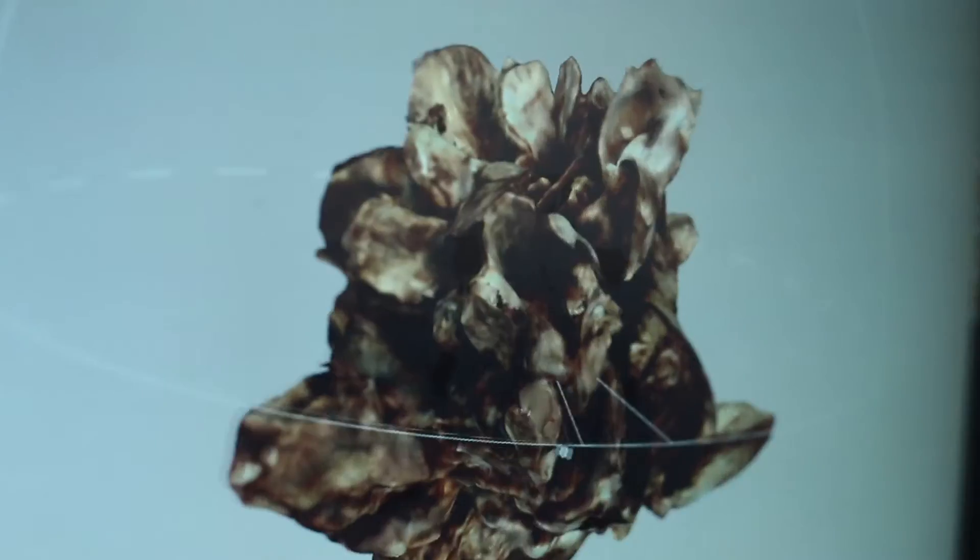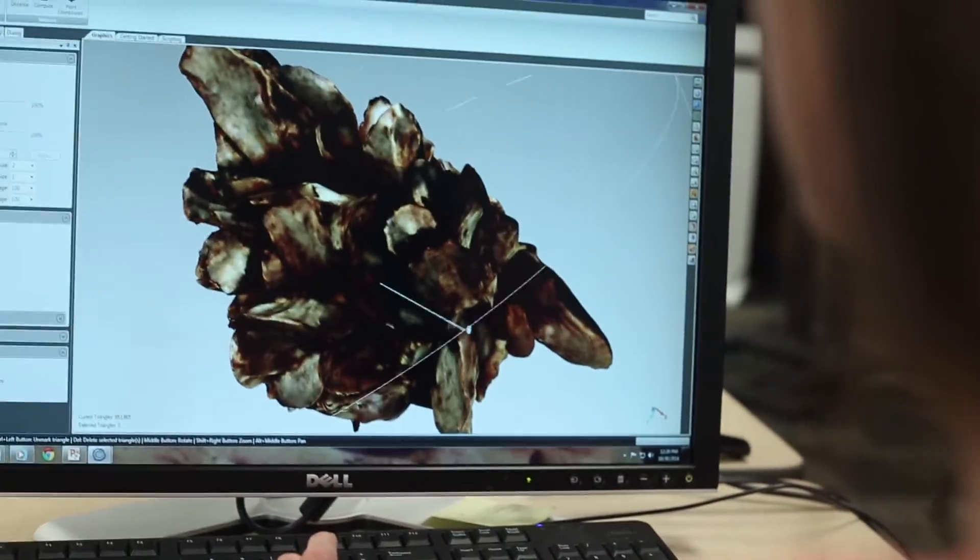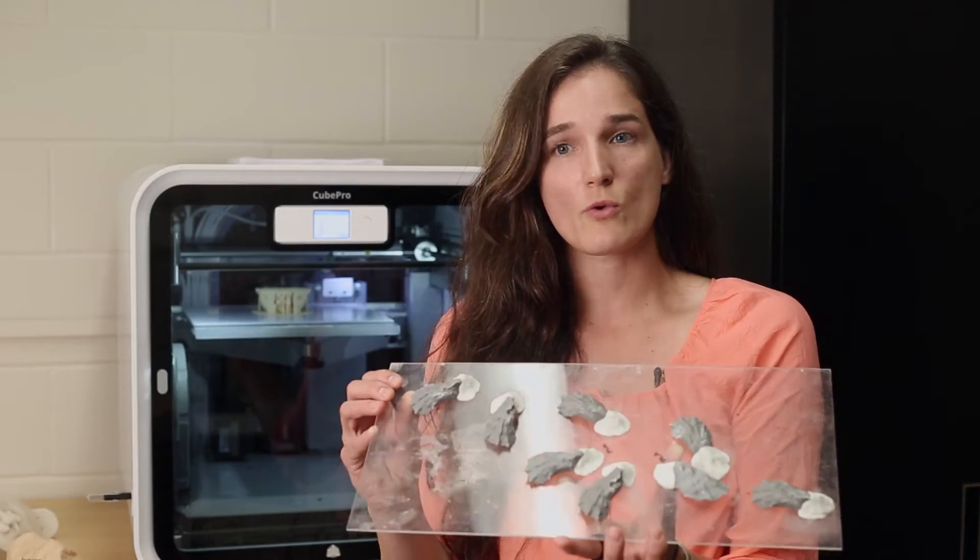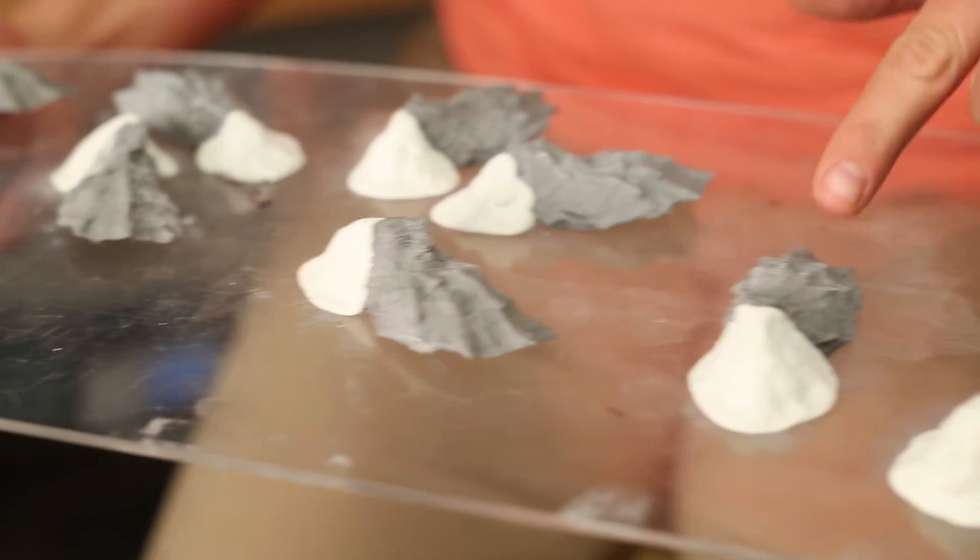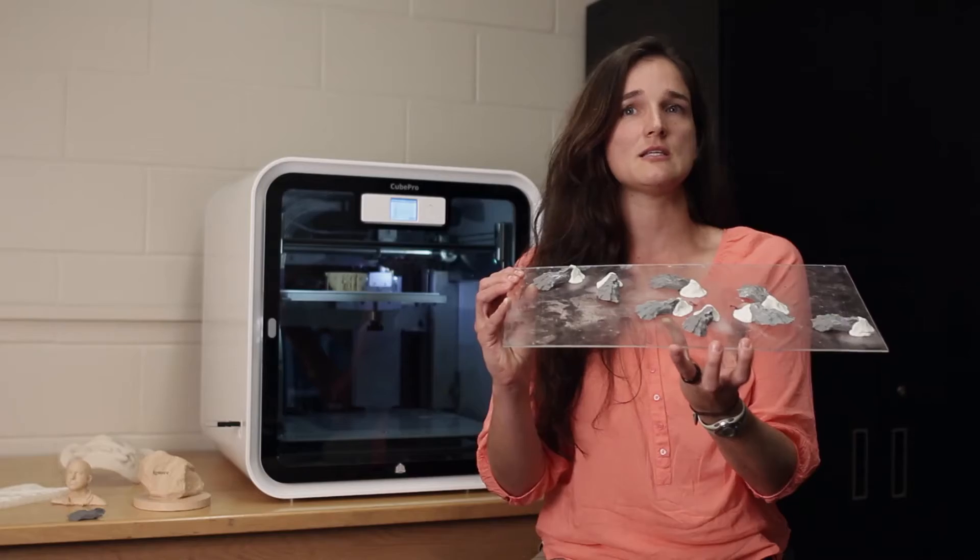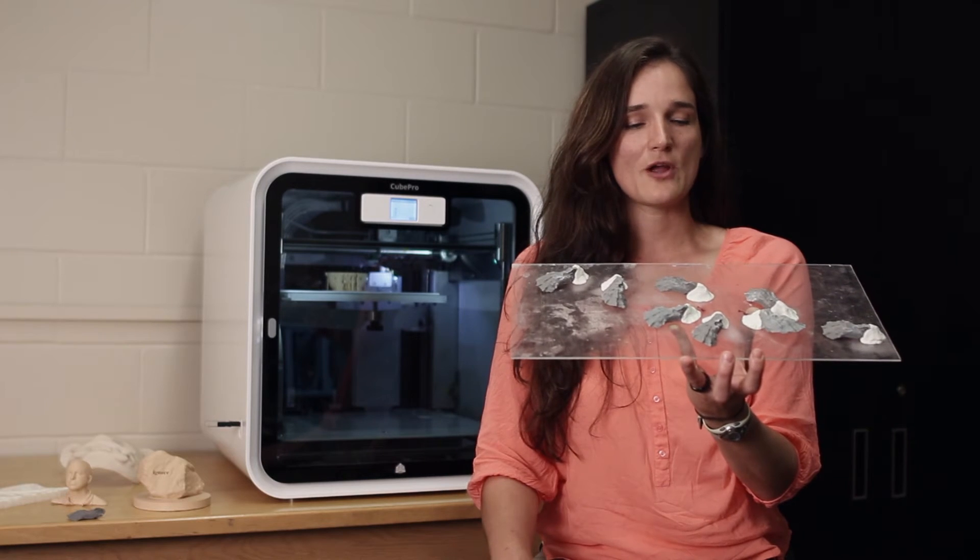So we've printed these 3D oysters from the Cube Pro, and we're actually using these to attract other oysters, and also to see how small crabs and shrimp and mussels use these little oyster habitats that we've made as refuge spaces.